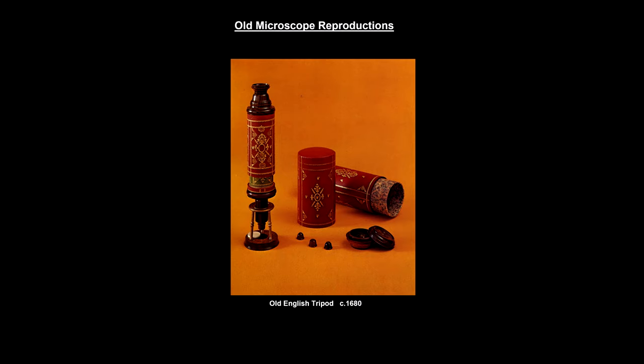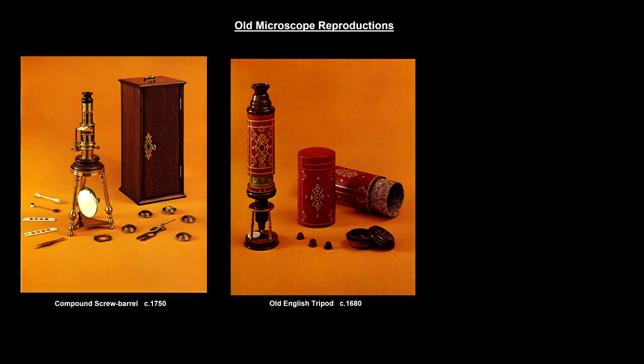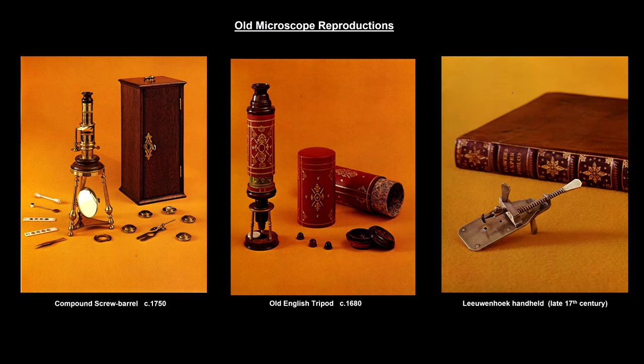Evidence points to the first microscope appearing in the Netherlands in the late 1500s. We know that Galileo used them in the early 17th century. The discovery of things like blood cells and microorganisms in the late 1600s really accelerated interest and development.